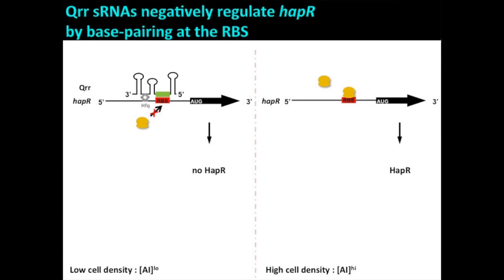By analogy in our system, at low cell densities when phosphate is flowing through the system, we make the small RNAs, and with HFQ's help they're pairing with HapR's message, preventing translation. That's why we predicted that at high cell densities, in the absence of the small RNAs, you get HapR protein. We wanted to test this experimentally.